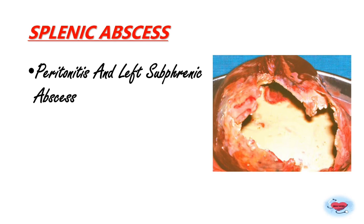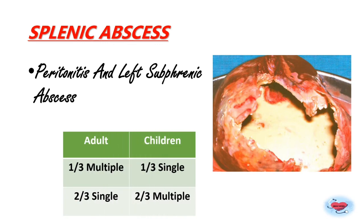In adults, one-third of splenic abscesses are multiple and two-thirds are single. In children, the reverse is true — one-third are single and two-thirds are multiple. A useful mnemonic: adults are usually single (two-thirds single, one-third multiple), the exact opposite of children.